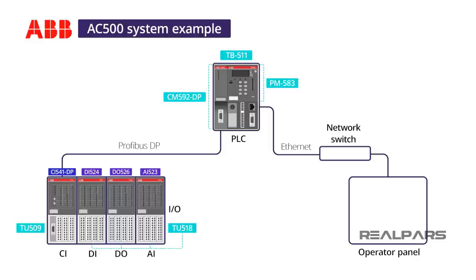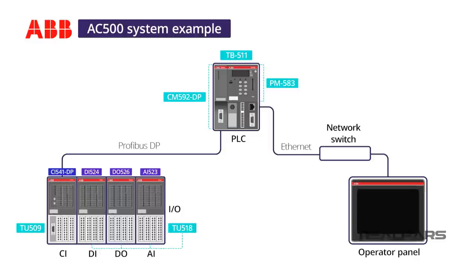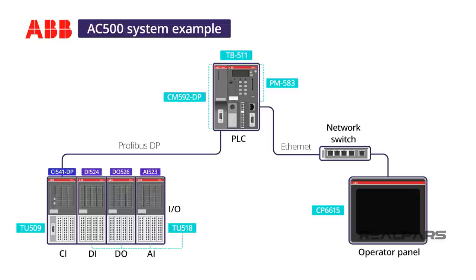To finish the hardware setup, I will select a CP6615 operator control panel with an Ethernet port. This panel has a 15-inch touchscreen and high-definition resolution. I will connect this HMI to the Ethernet port on the PM583 PLC.